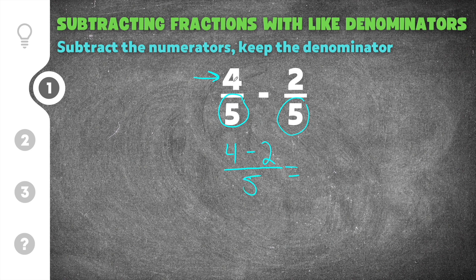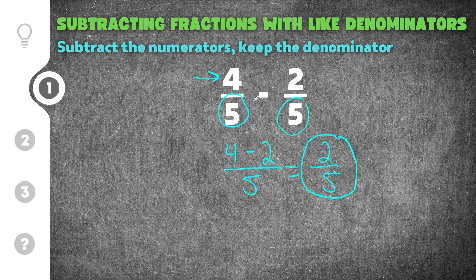So we do our numerators 4 minus 2, which is 2. And then we keep the denominator of 5. The last thing we want to do is check to see if we can reduce this. In this case, there's no number that goes into 2 and 5 evenly. So our final solution is just going to be 2 fifths. So 4 fifths minus 2 fifths is equal to 2 fifths.